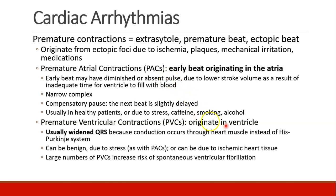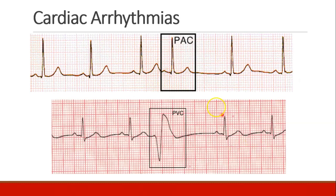PVCs are a little different — they originate in the ventricle. Usually these patients have a widened QRS because conduction isn't going through the His-Purkinje system but directly through heart muscle from myocyte to myocyte, which is slower. PVCs can be benign, or they can occur with stress, or they can be due to ischemic heart disease. Patients having large numbers of PVCs may be at increased risk for spontaneous ventricular fibrillation. Here we see a PAC with a compensatory pause, and here's a PVC — wide.